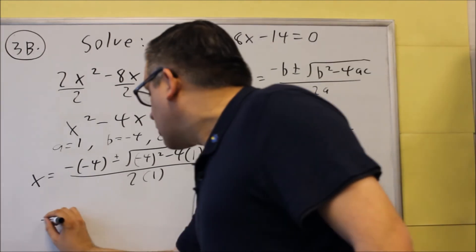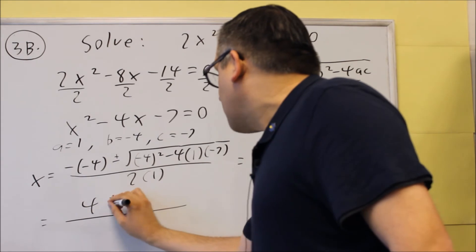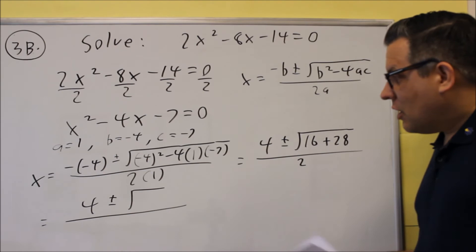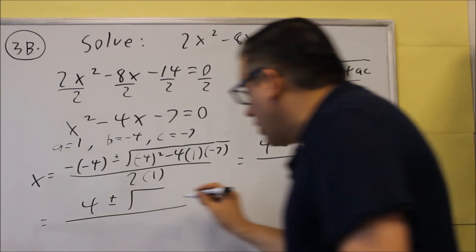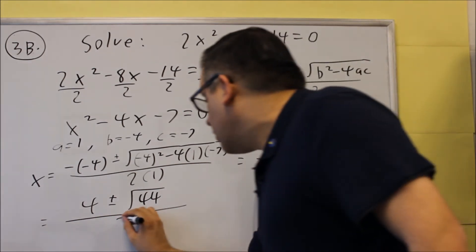So let's keep on going. We can do some more. Not done yet. So 4 plus or minus, okay, we're going to add 16 and 28 together, and so then we're going to get a 44 inside with a 2 down below.